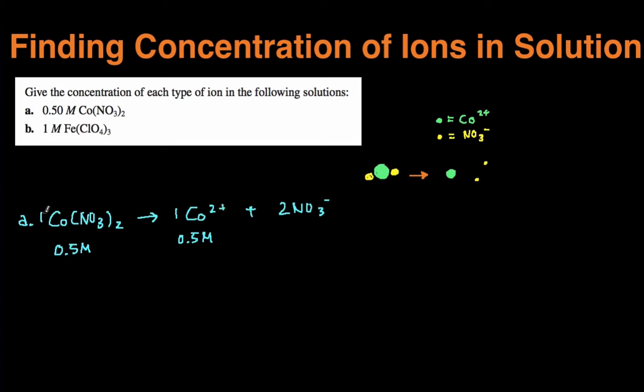And then you can see that this is a 1 to 2 ratio. So that means we're going to get twice as much nitrate, meaning we're going to get 0.5 times 2, which is just one molar.